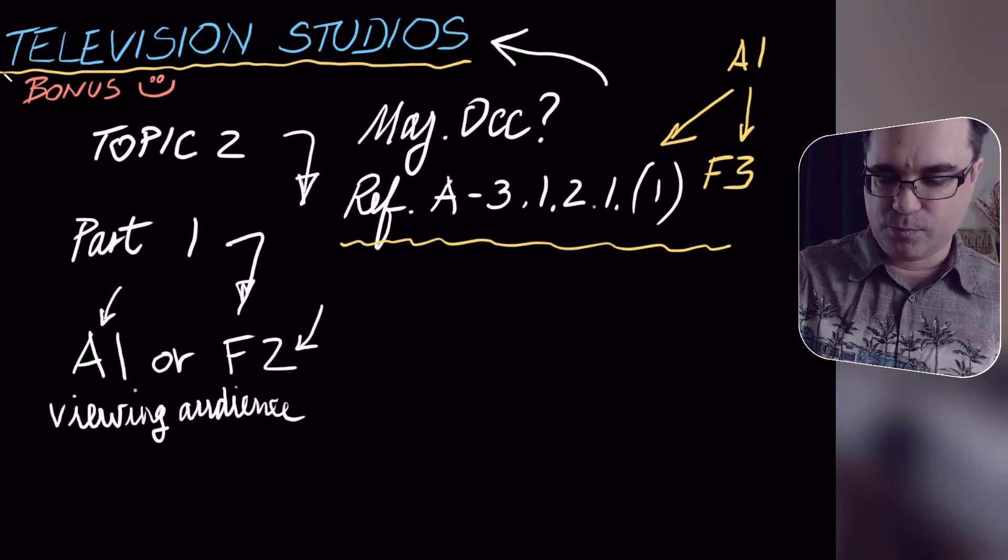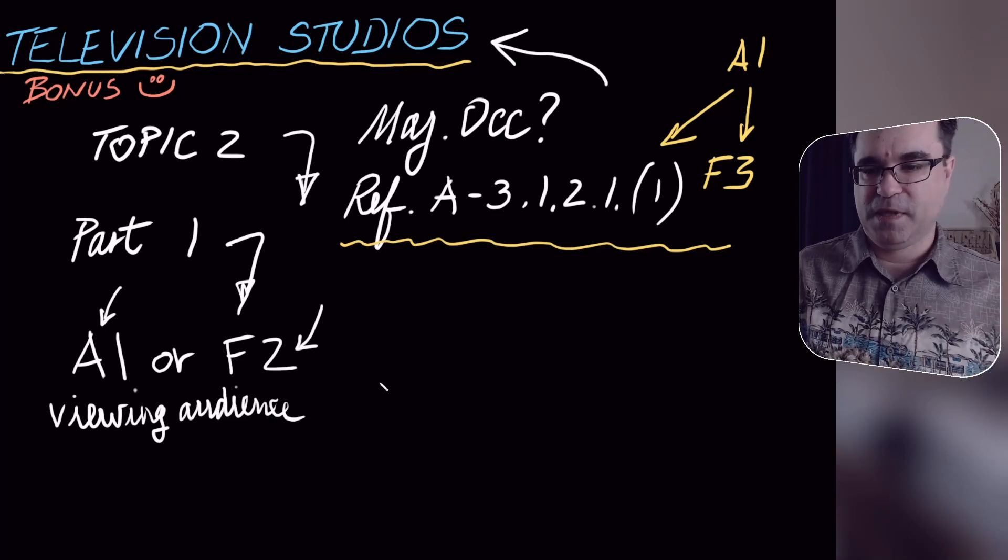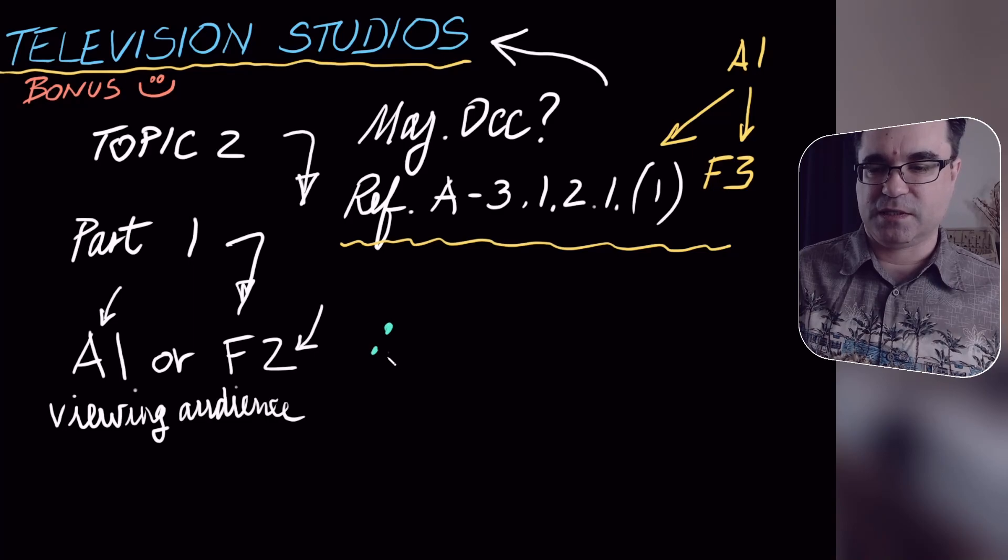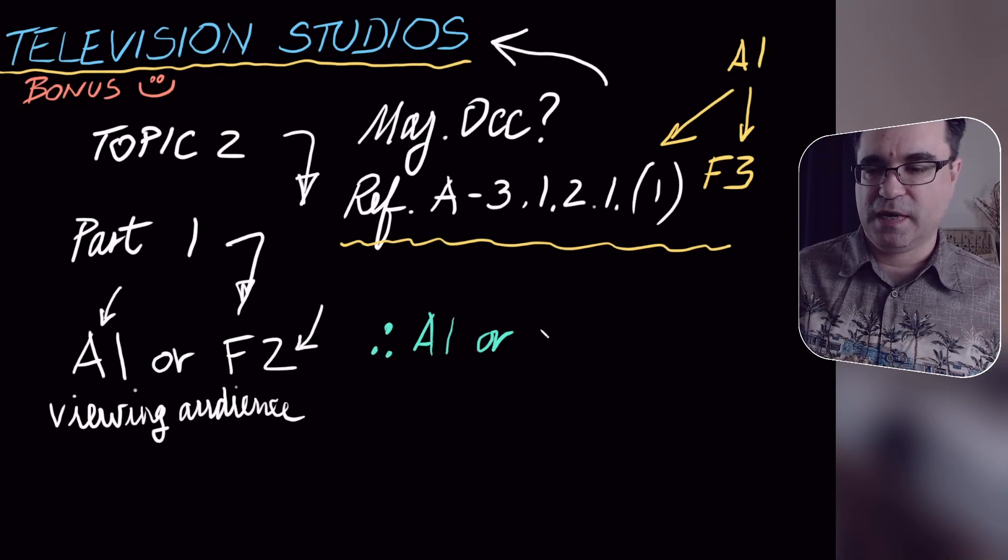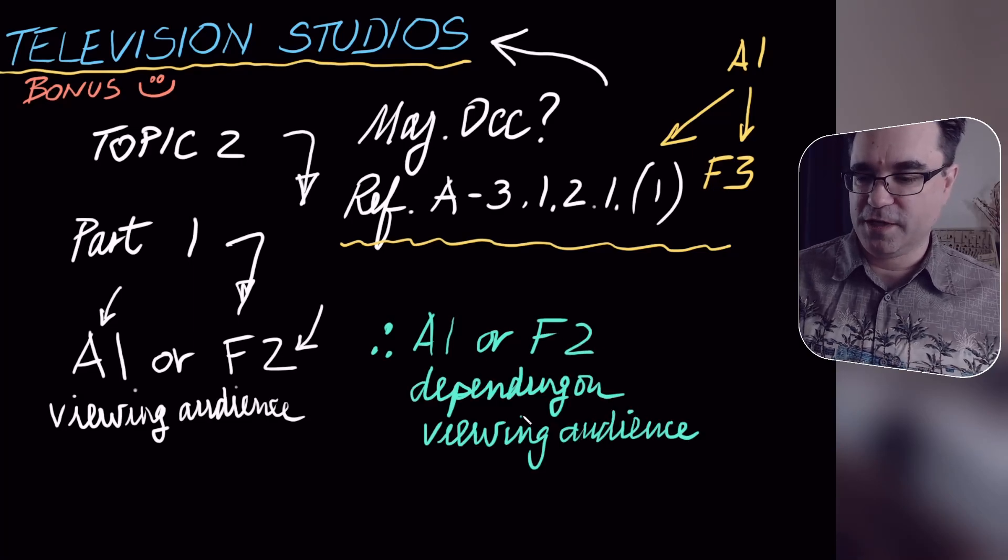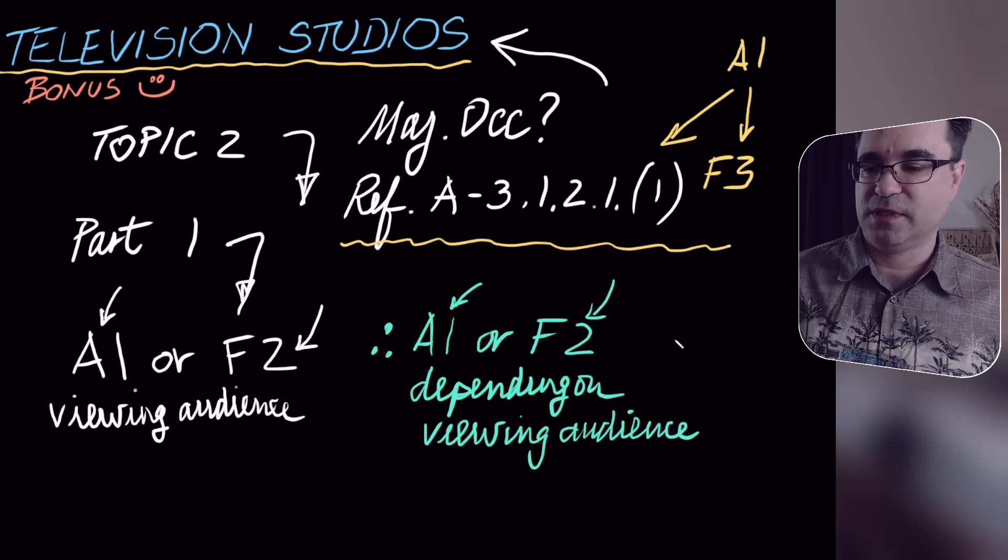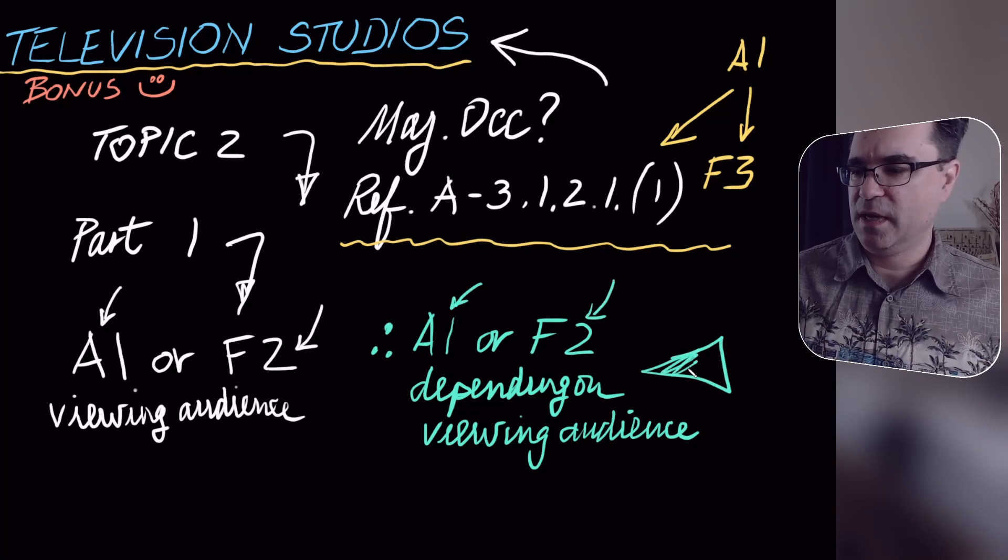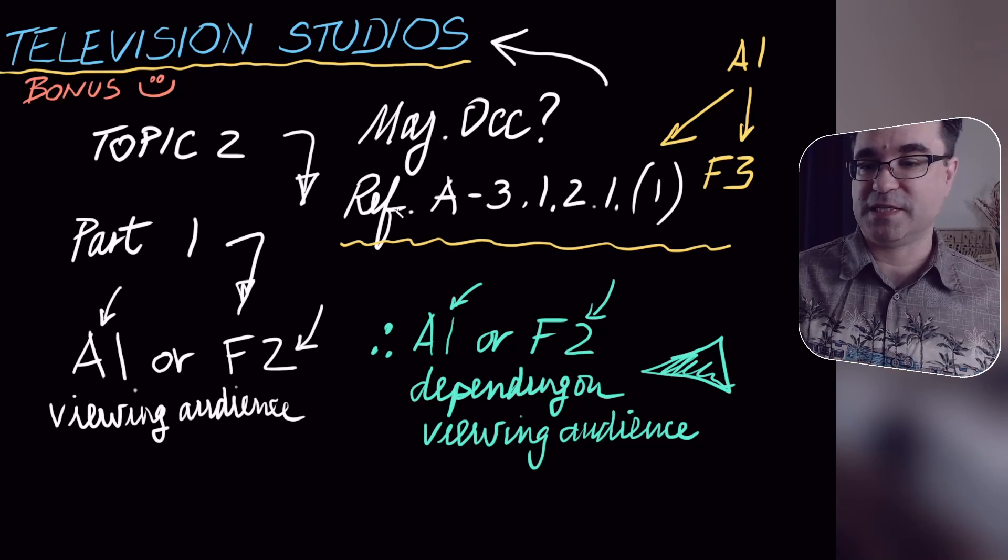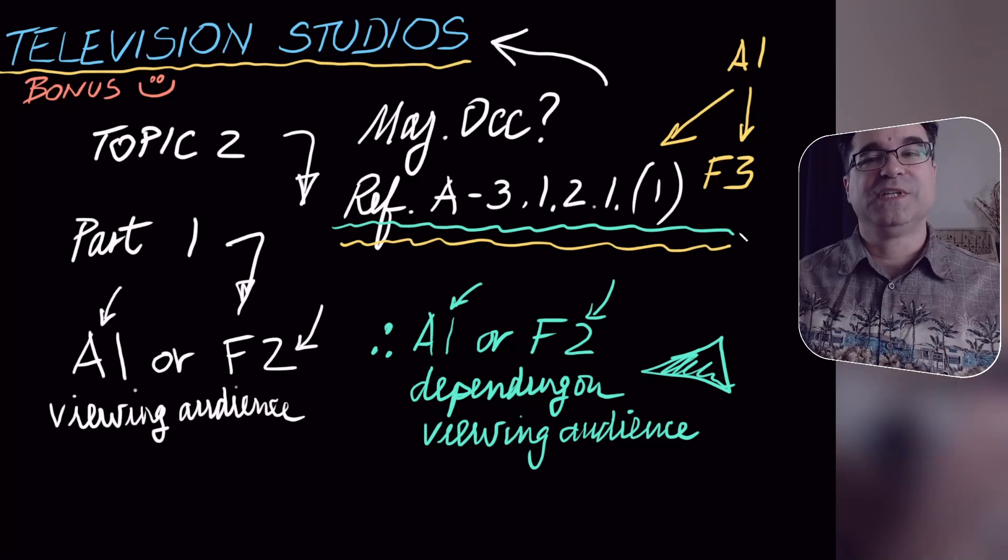So let me wrap this up. How would I solve this? What would be the answer that I would give? Well, I would say probably something like this. Therefore, this can be an A1 or an F2 major occupancy depending on the viewing audience. If it's allowed, then it's A1. If it's not allowed, then it's an F2. And this is my final answer. It's a good answer because it also includes the reference that I used for this. And we're done.